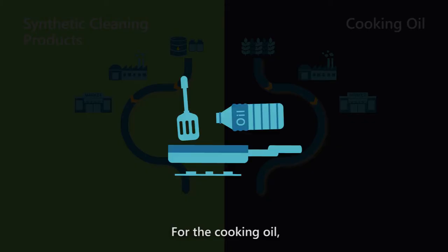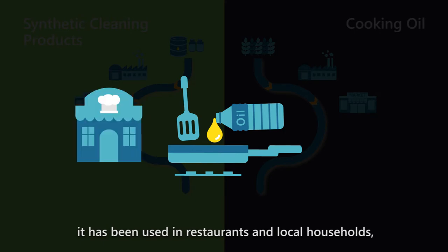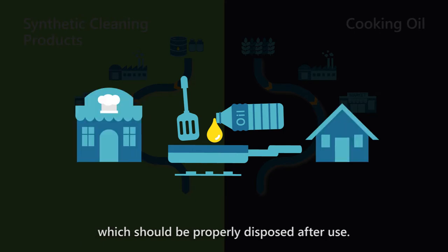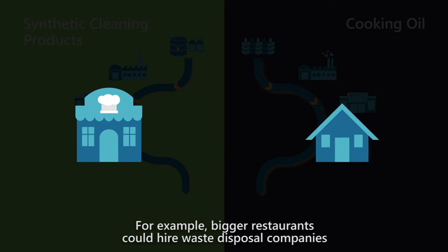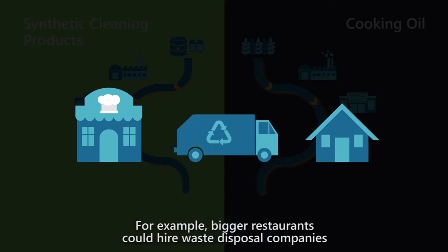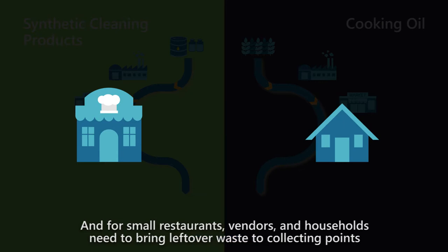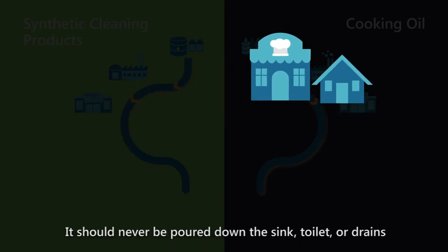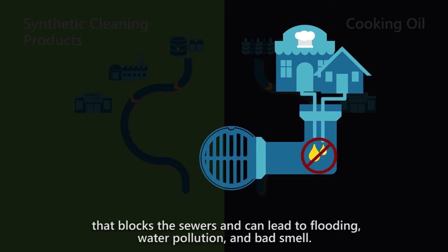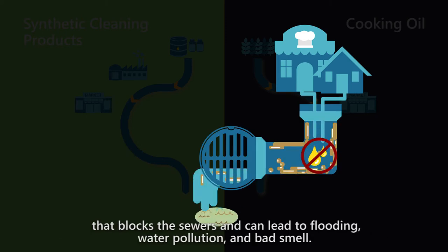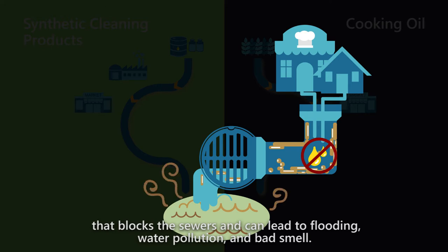For the cooking oil, it has been used in restaurants and local households, which should be properly disposed of after use. For example, bigger restaurants could hire waste disposal companies, and for small restaurants, vendors, and households need to bring leftover waste to collecting points. It should never be poured down the sink, toilet, or drains that block the sewers and can lead to flooding, water pollution, and bad smell.